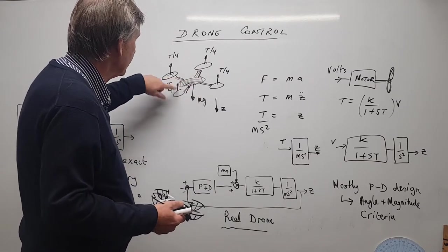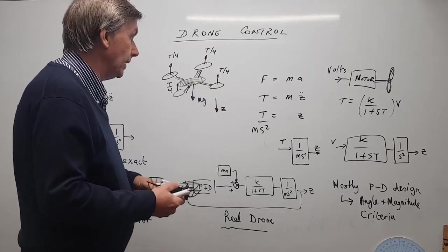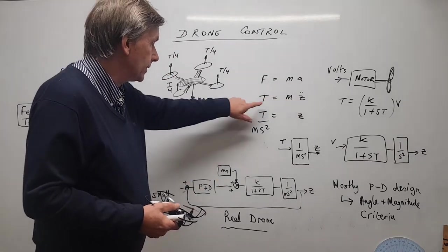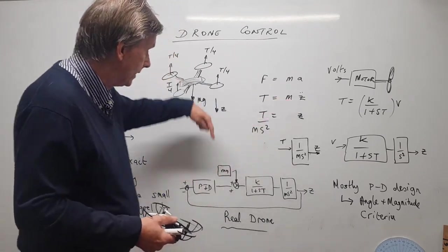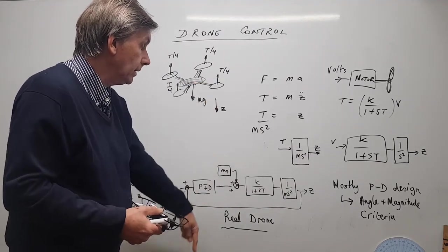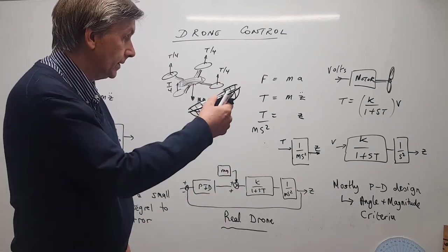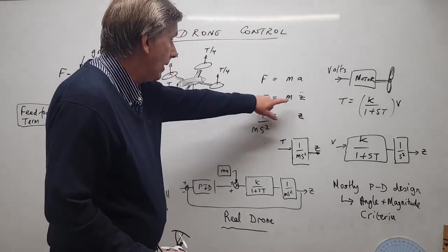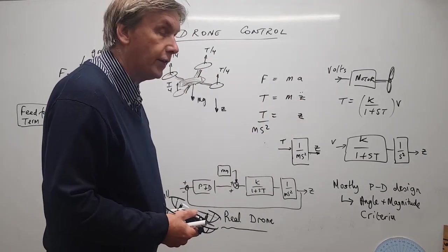With four rotors, each provides a quarter of the thrust. It has a mass and can move up and down. We apply Newton's second law: F = ma, but we call the force 'thrust.' So thrust equals m times z-double-dot, where z is the motion up and down. We know that z-double-dot can be represented by 1/s² times z, or equivalently s²z.